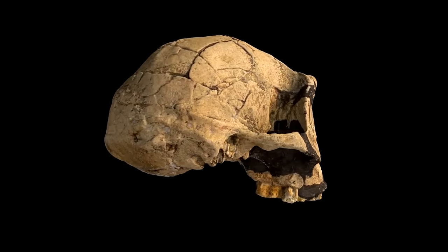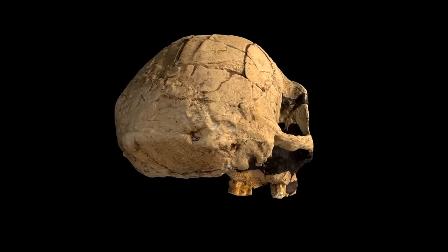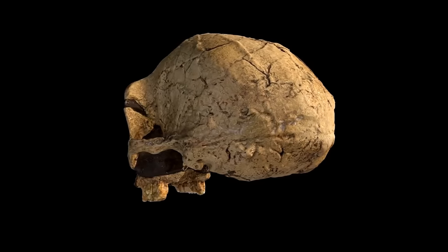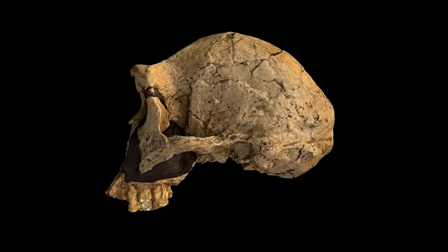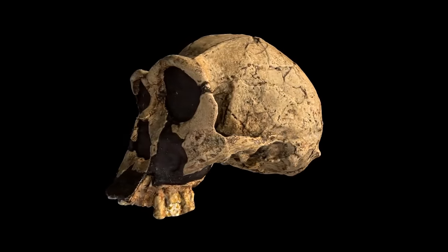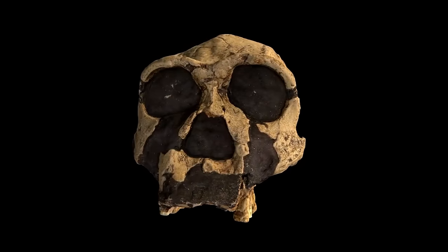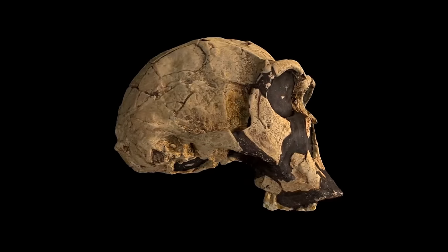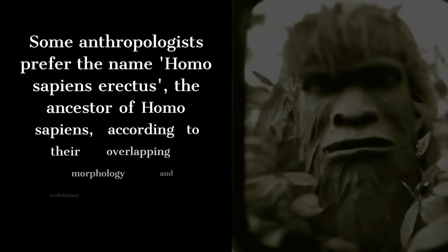The bones, discovered in deposits between one million and seven hundred thousand years ago, sparked debate because Dubois claimed they showed evidence of a transitional species between apes and humans. Homo erectus fossils have since been discovered in Africa and other parts of Asia, and it is possible that the species is a direct ancestor of our own. Because of their overlapping morphology and evolutionary relationship, some anthropologists recognize them as subspecies of Homo sapiens, known as Homo sapiens erectus.